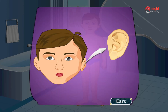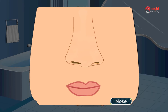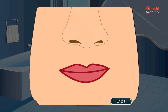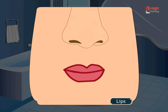Ear. There are two ears. We hear with our ears. Nose. This is a nose. It helps us to smell things. Lips. These are our lips. We can smile with our lips.